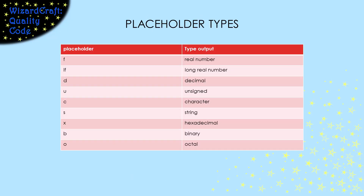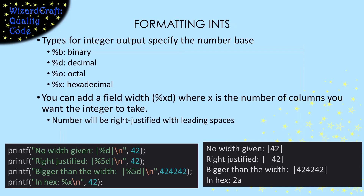There's a pretty long list of placeholder types, but these are the ones you're most likely to need. For formatting ints, the type you pick specifies the number base in which the value will be displayed. You can also specify the field width by putting an integer between the % and the format type.